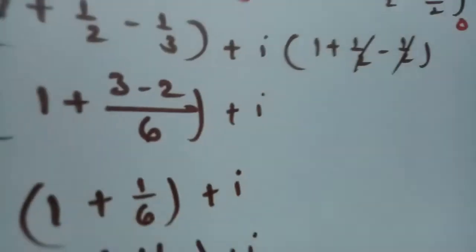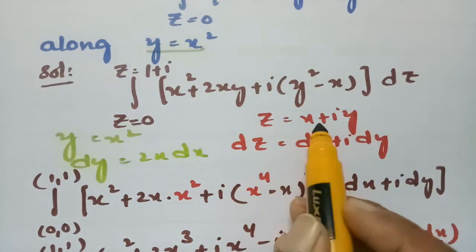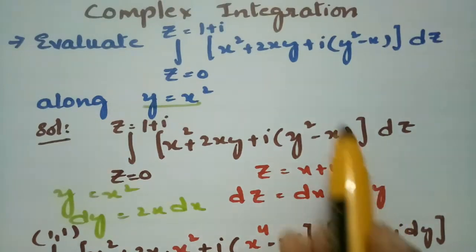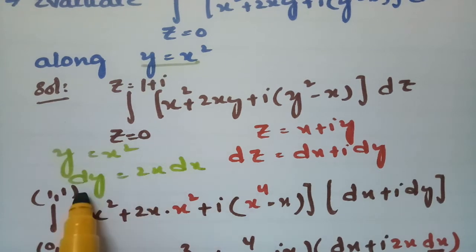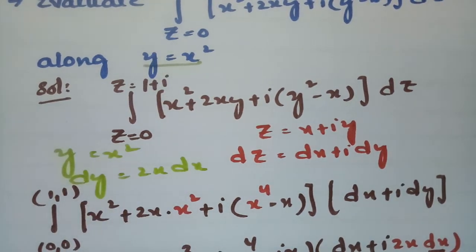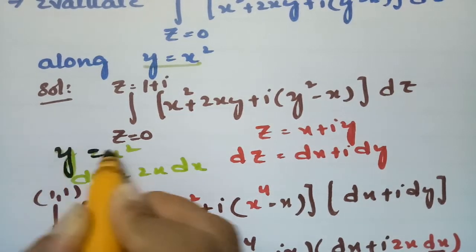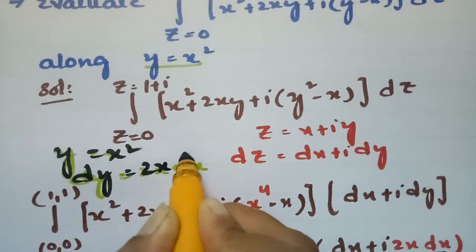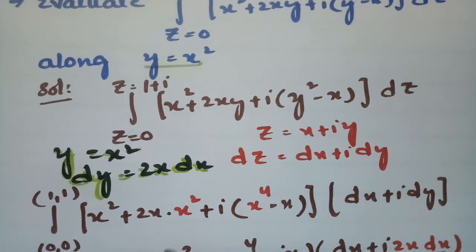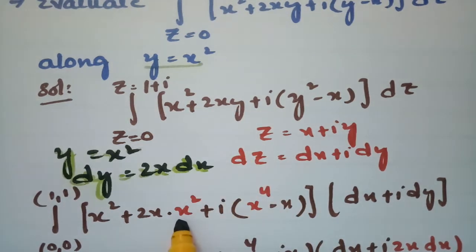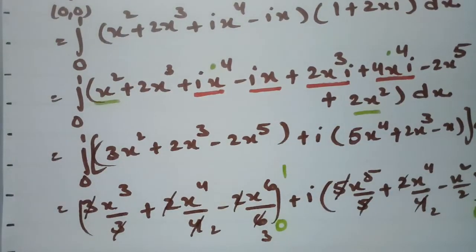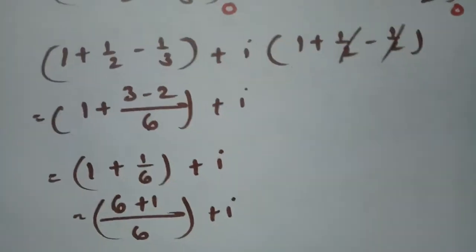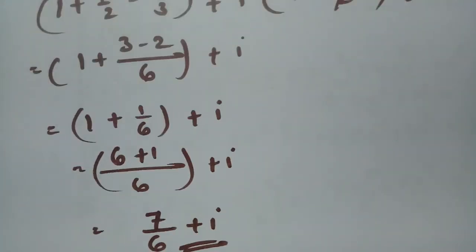To summarize: z = x + iy so dz = dx + i·dy. We evaluate the integral along y = x², substituting y = x², y² = x⁴, and dy = 2x dx throughout. After multiplying, simplifying, integrating, and substituting the limits, the final answer is 7/6 + i.